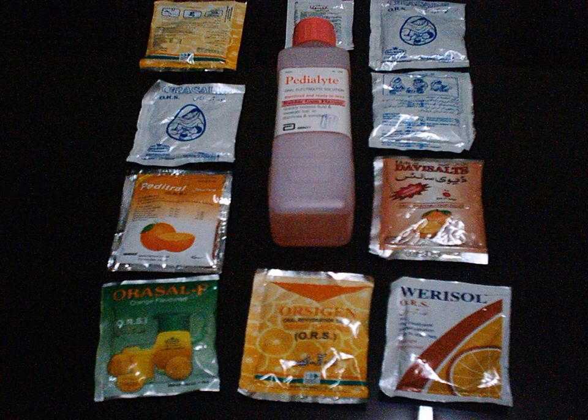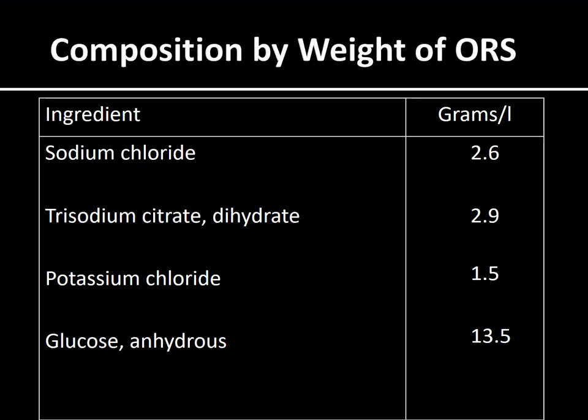These are the different types of ORS available in the market — some are flavored, some have rice paste or other thickening added. There is WHO ORS and also a low-osmolar ORS. The composition of ORS is: sodium chloride 2.6 g/L, trisodium citrate 2.9 g/L, potassium chloride 1.5 g/L, and glucose anhydrous 13.5 g/L. ORS is the discovery of the century — a very simple formula that works wonders and has saved lives.